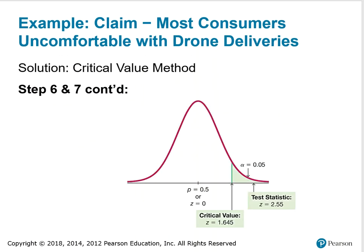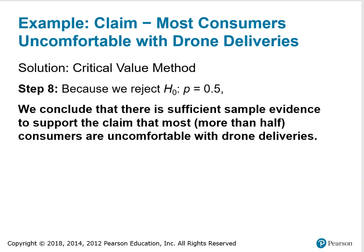In this picture, you will notice that the critical value is 1.645 and the test statistic is z equals 2.55, which does fall in the critical region. Because we rejected H sub 0, where p equals 0.5, we conclude that there is sufficient sample evidence to support the claim that most — which is more than half — consumers are uncomfortable with drone delivery.